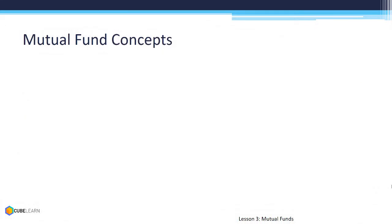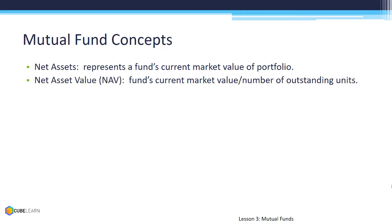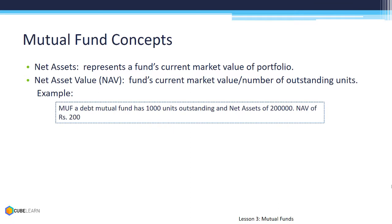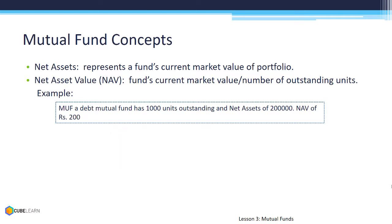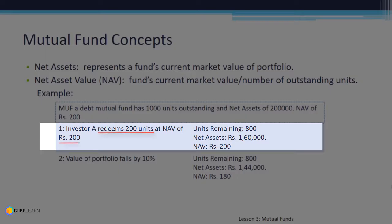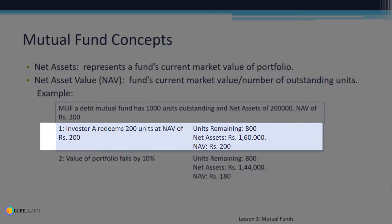We need to understand two distinct concepts: Net Assets and Net Asset Value, or NAV. For example, a mutual fund has 1,000 units outstanding whose total value is Rs. 2,00,000. NAV is market value divided by outstanding units, which equals Rs. 200. If an investor sells 200 units at Rs. 200 for a total sum of Rs. 40,000, the net asset will be Rs. 1,60,000 and units remaining will be 800. Rs. 1,60,000 divided by 800 means the NAV will remain at Rs. 200.